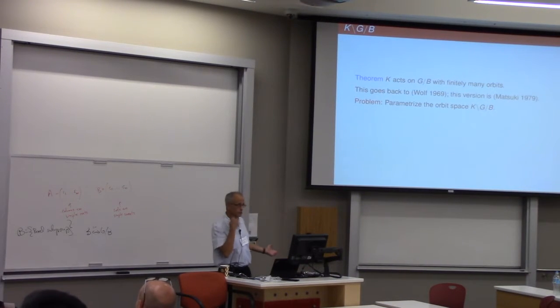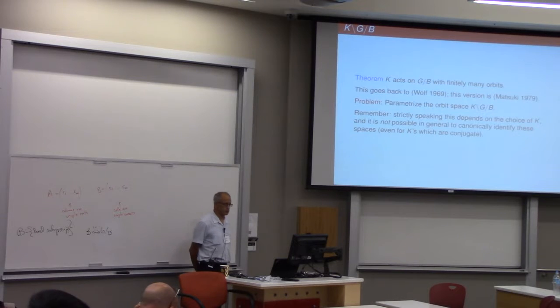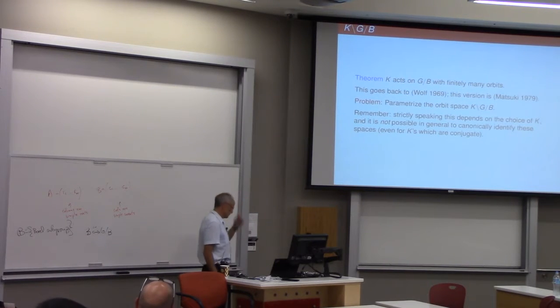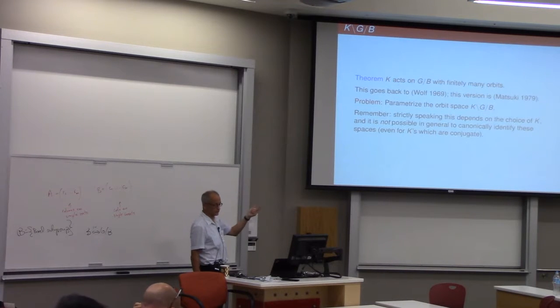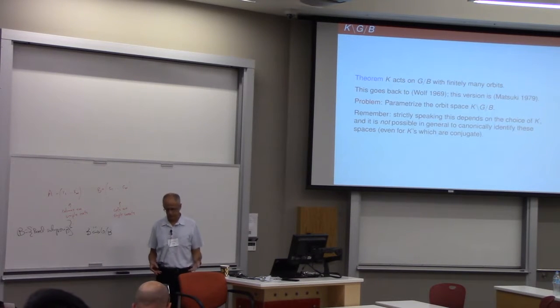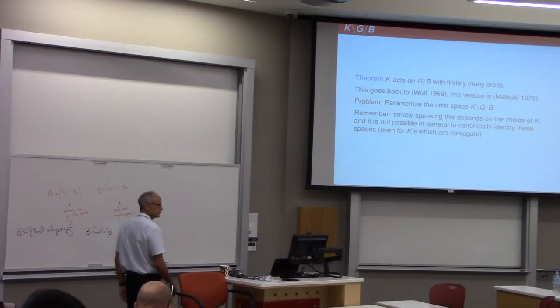So we've got an interesting combinatorial problem here: parametrize the set KGB. And that's a finite problem. And as I said last time, I'm working on a computer, so I definitely want to stick to finite problems when I can. So I'm going to talk a little bit more about this later. Strictly speaking, this depends on the choice of K. Well, not strictly speaking, it does depend on the choice of K. But if you have two different K's which are conjugate, it's still not necessarily possible to canonically identify these spaces. So there's really some choice here in what I'm saying. Often times in analysis, we're a little bit vague about what we mean by K. And most of the time it doesn't matter, but every once in a while, in order to be precise, we're going to have to specify the K.